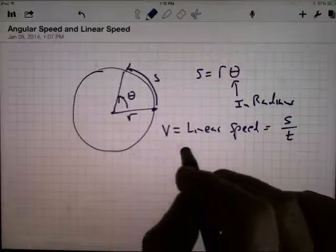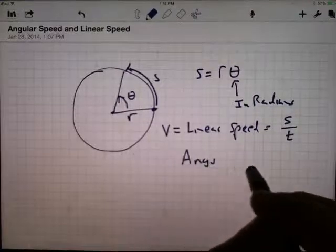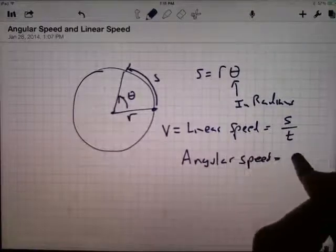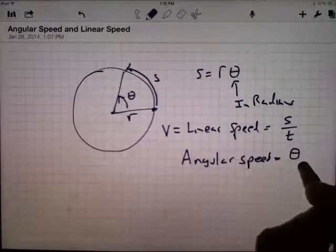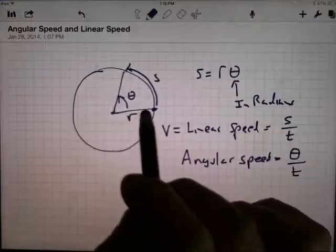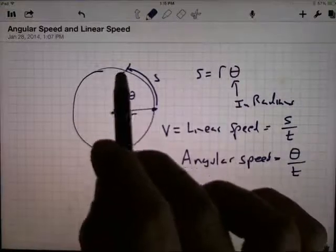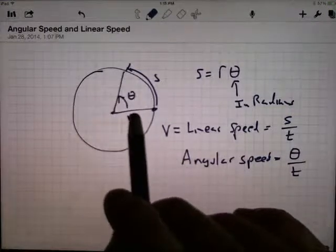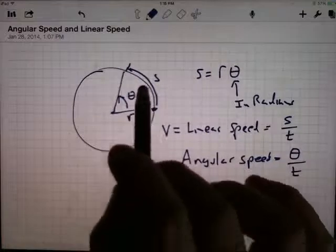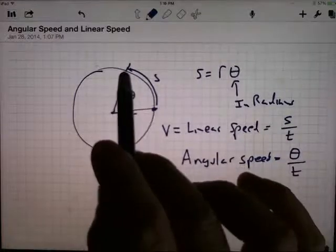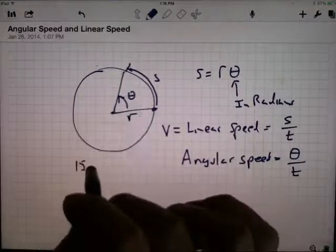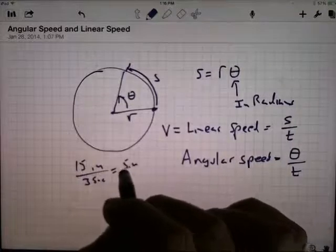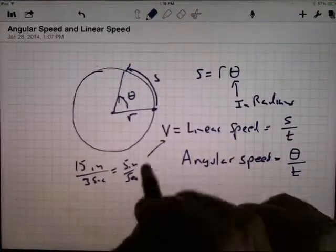There's also the notion of the angular speed or angular velocity, and that would be the amount of change in the angle divided by how much time it took. If you traveled 15 inches in 3 seconds, that would be 15 inches divided by 3 seconds, that would be 5 inches per second. That's a linear speed.